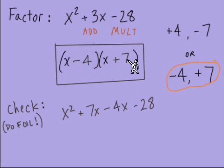The outer is going to be a positive 7x. The inner is a negative 4x. The last is negative 4 times positive 7 for that negative 28.